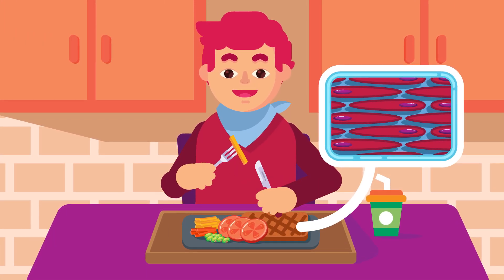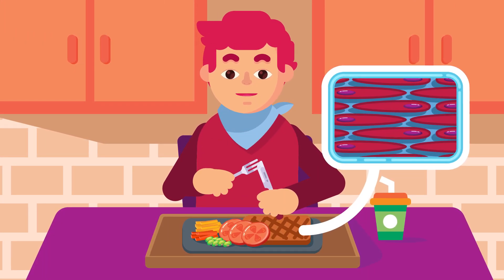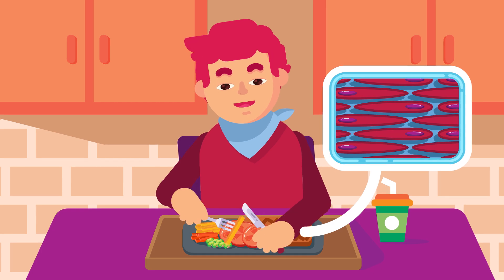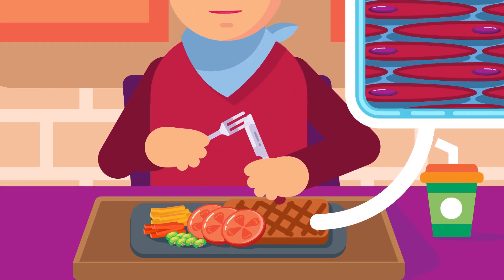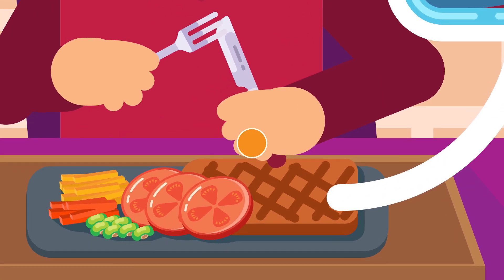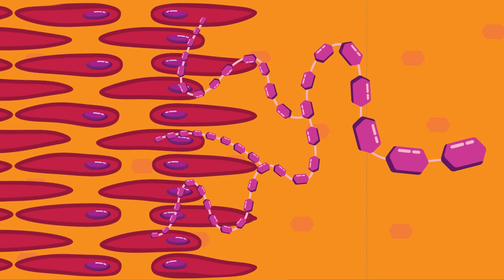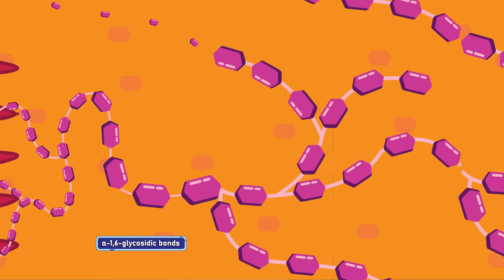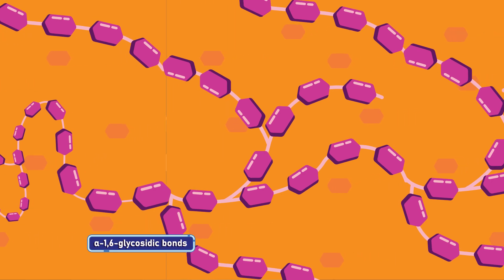Glycogen is sometimes referred to as animal starch. It is a stored form of carbohydrate in animals and also in fungi. In mammals, it is stored mainly in the liver and in the muscles. It is formed when numerous glucose molecules condense to form highly branched chains of glucose units.